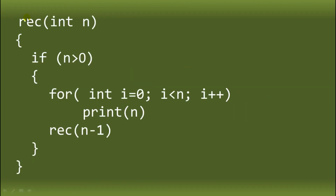So here guys, we have our function named `rec` and it will accept the variable N with data type int. Inside the function, we have a condition. Inside the condition is a for loop that will start from 0 up to less than N, then increment by 1. The for loop will print the value of I. After the loop, it will call the `rec` function again passing N minus 1.